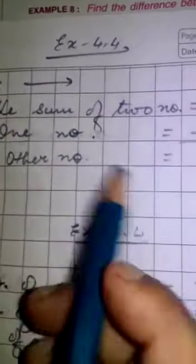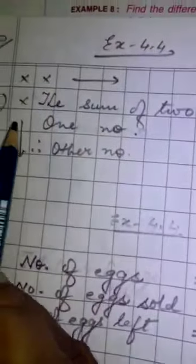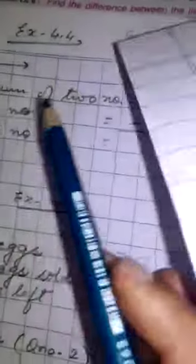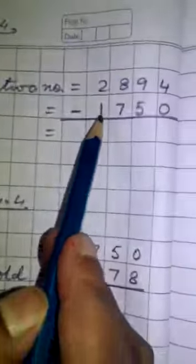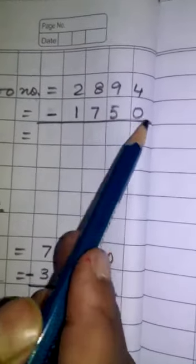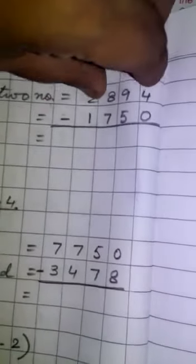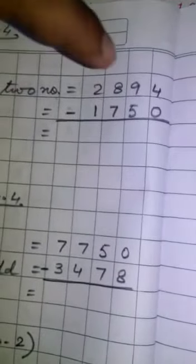First, I have written the exercise. And now, first you write the sum of two numbers equal to 2894. Now, second you see, second line, one number equal to 1750. Means, sum of two numbers kitna itna hai? Usme se one number kya hai? Itna.